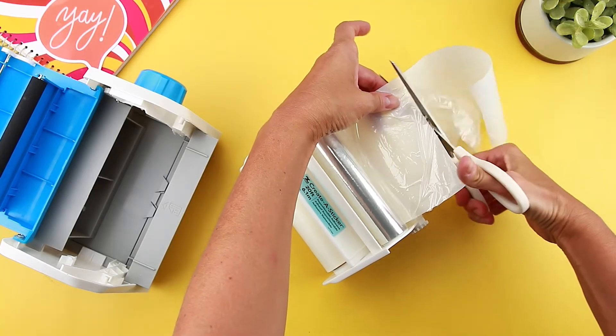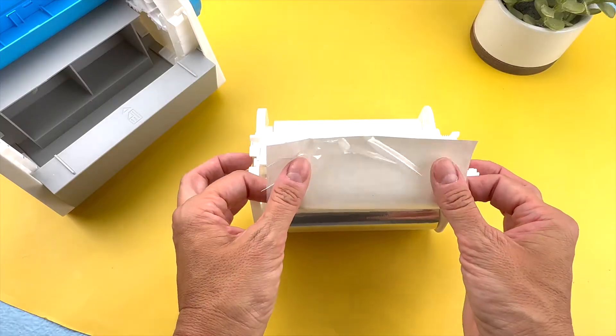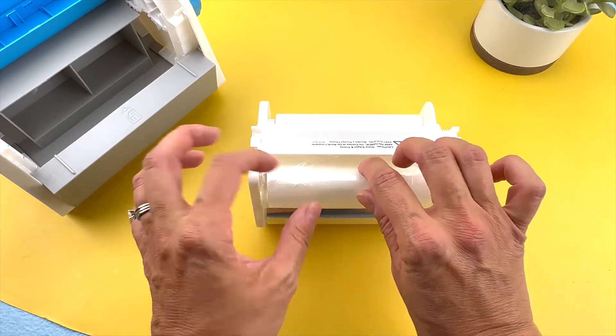Cut it so you have a nice, clean edge. Then pull both through the large space and back of the refill cartridge.